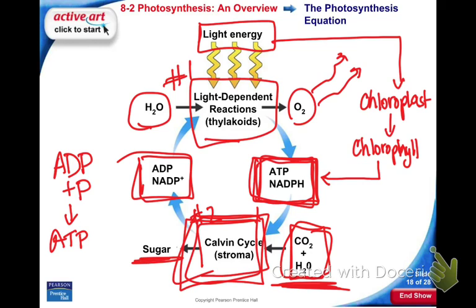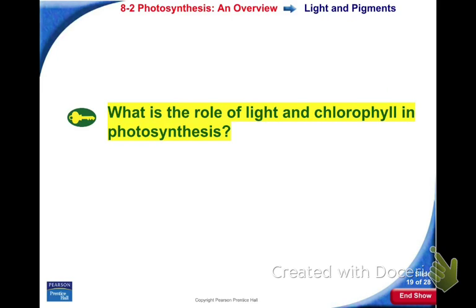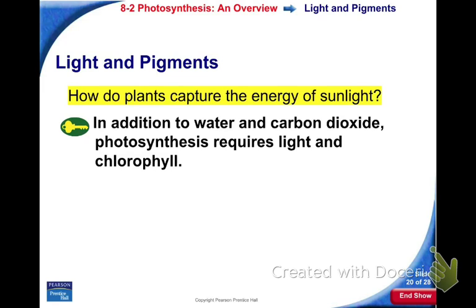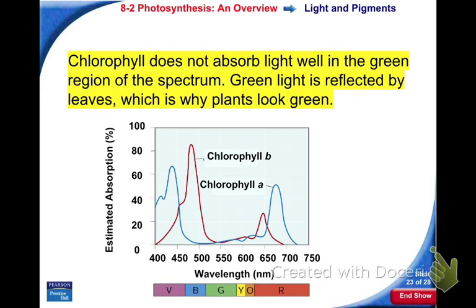As long as you've got ATP, carbon dioxide, and water, you can do the Calvin cycle. Can you do the light dependent reaction without light? No. This is why plants have to have light. The last part of this chapter: can you answer the question — what's the role of light in chlorophyll? Plants look green because they're actually reflecting green light back, while the other types of light are being absorbed.